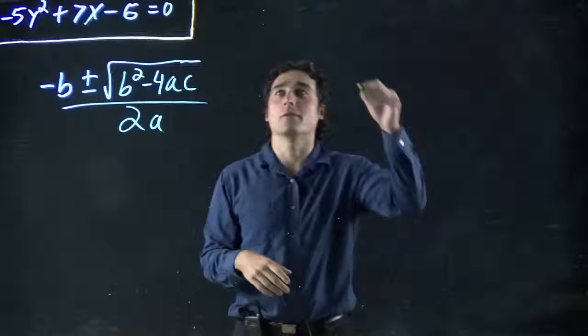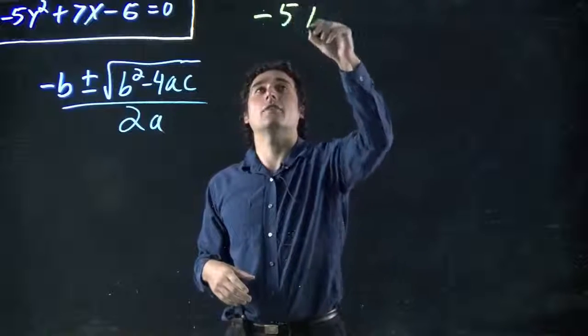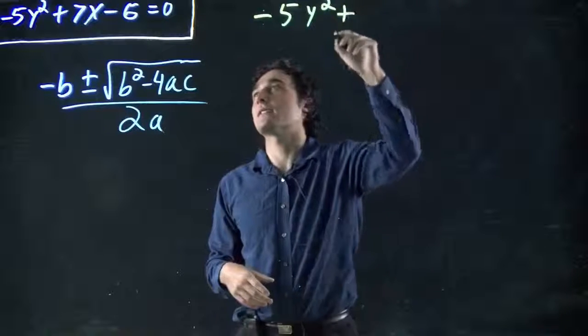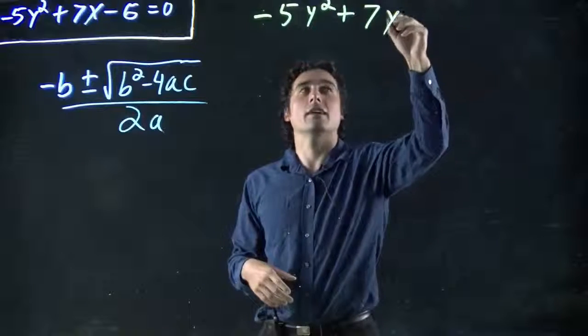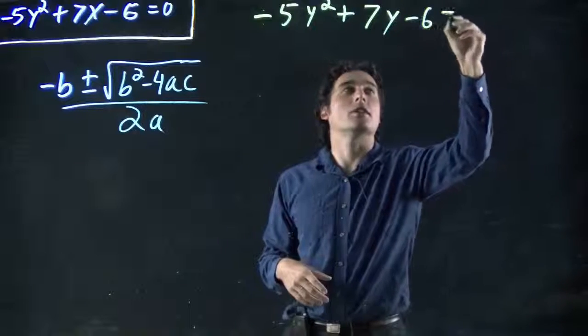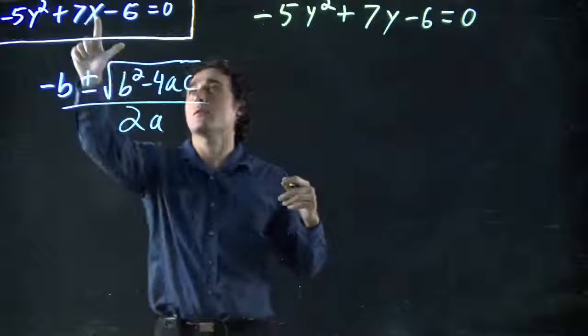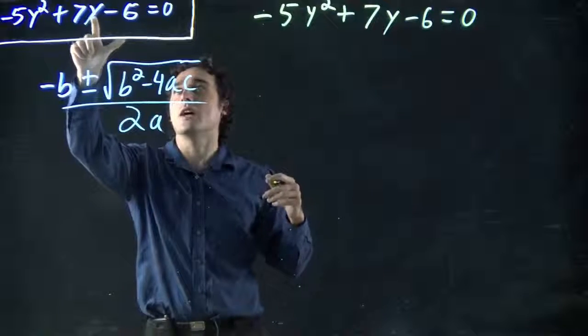What do we got? We've got minus 5y squared plus, that should be 7y, kind of looks partly like an x. My apologies. To fix it, I will do this, it's a y.